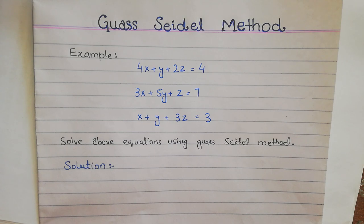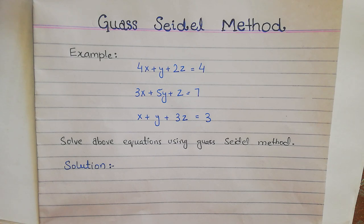You have to solve them using the Gauss-Seidel method and find the values of X, Y, and Z. Now let's see the example. We have 3 equations given, and we have to use these 3 equations to solve the approximate values of X, Y, and Z.